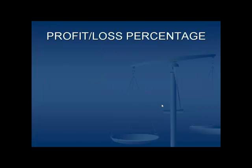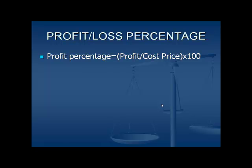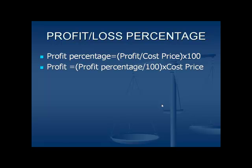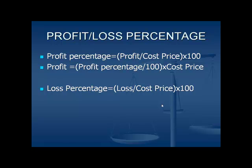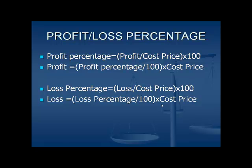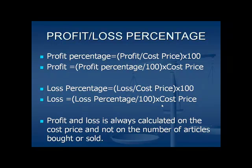Let us see how we calculate the profit or loss percentage. Profit percentage is equal to profit divided by the cost price, multiplied by 100. If we want to calculate profit from the profit percentage, profit is equal to profit percentage divided by 100, multiplied by the cost price. Loss percentage is equal to loss divided by the cost price, multiplied by 100. Loss is calculated by loss percentage divided by 100, multiplied by the cost price. We need to remember that profit and loss is always calculated on the cost price, and not on the selling price and not on the number of articles bought or sold.